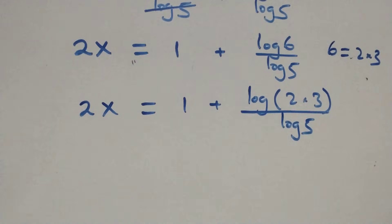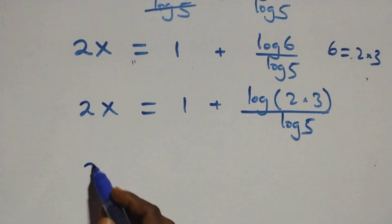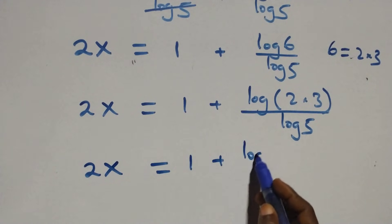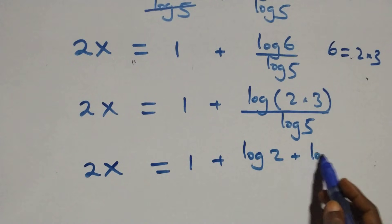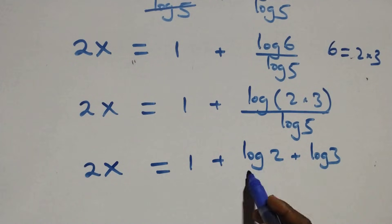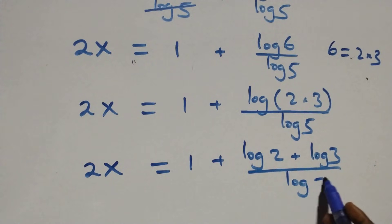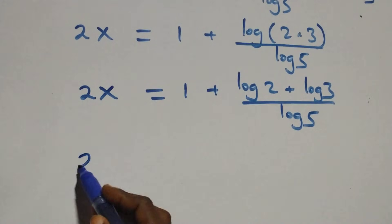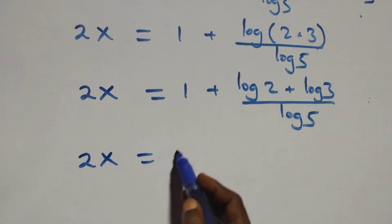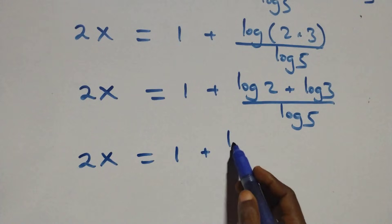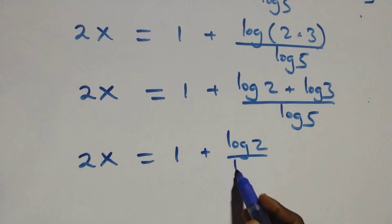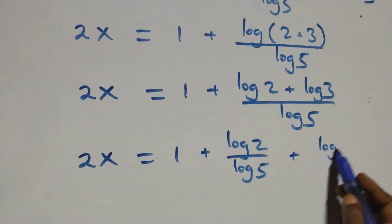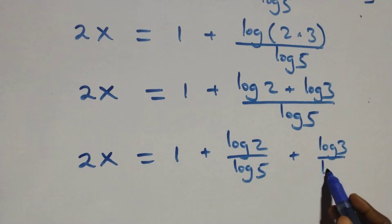This also follows the log product rule: log 6 = log 2 + log 3. So we have 2x equals 1 plus (log 2 + log 3) over log 5. Separating into two fractions: 2x equals 1 plus log 2 over log 5 plus log 3 over log 5.